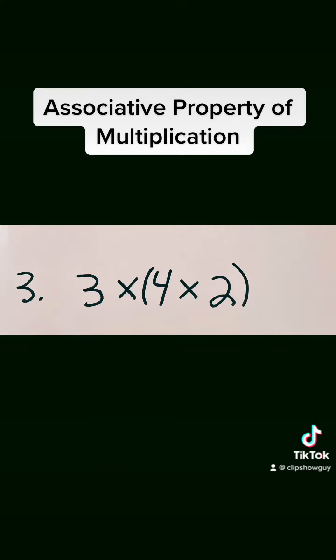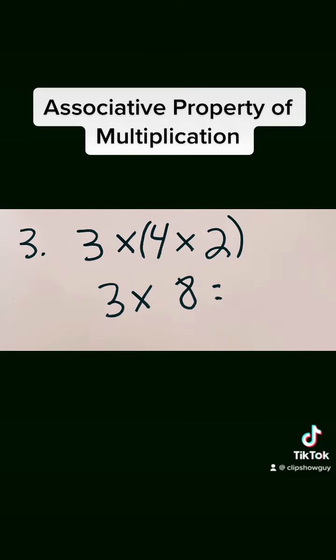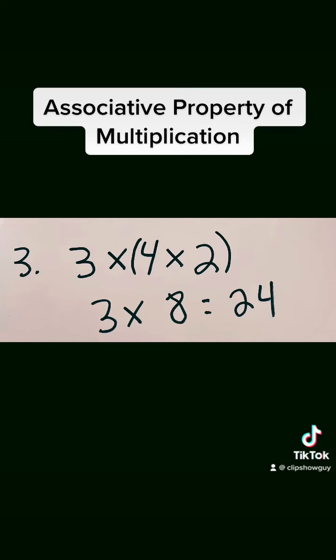The associative property also says I can rewrite the problem. So this time, I end up with 4 times 2 first. 4 times 2 equals 8. I'm left with 3 times 8. 3 times 8 equals 24.